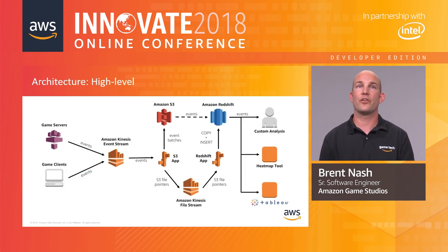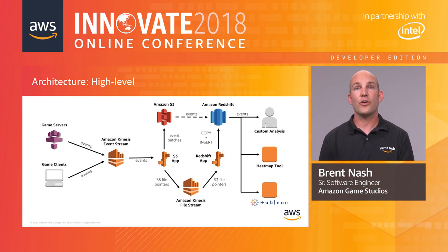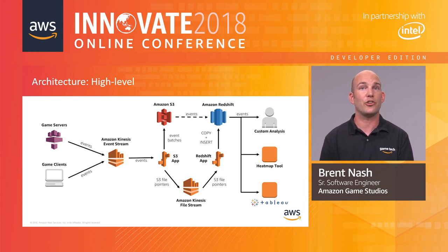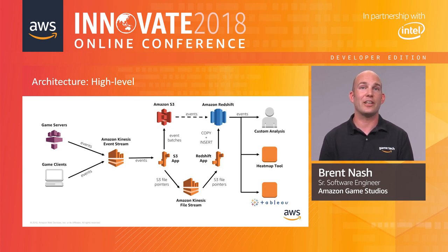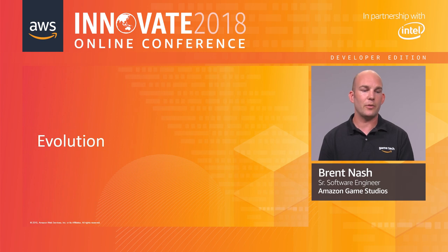With that we've got our entire architecture: clients and servers publishing events, Kinesis ingesting into the backend, cold data in S3, warm data in Redshift, plus a heat map tool, ad hoc SQL queries by developers and analysts, and Tableau from the AWS Marketplace talking directly to Redshift to generate persistent workbooks anyone can check at any time. But things change and evolve, so let's talk about the evolution of this architecture.